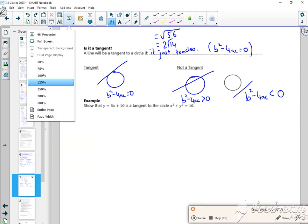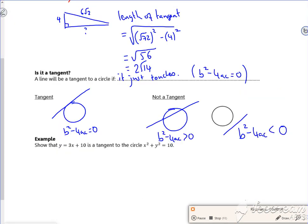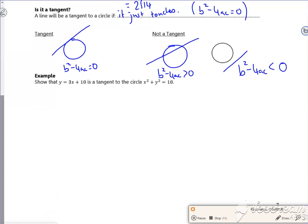Right, so this is the last example for Lesson Two of Circles, and it's the last example for the packet, which is nice. So it says show that this is a tangent.